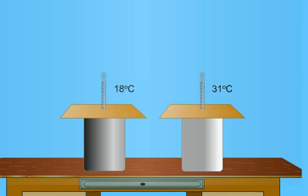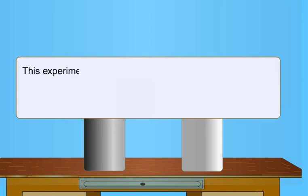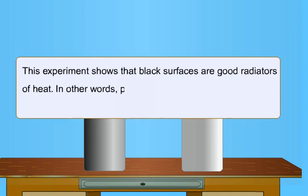Students, this experiment shows that black surfaces are good radiators of heat. In other words, polished surfaces are good reflectors but poor radiators of heat.